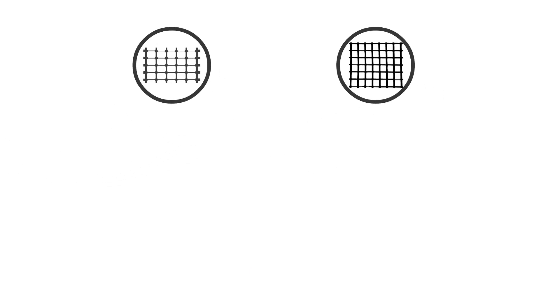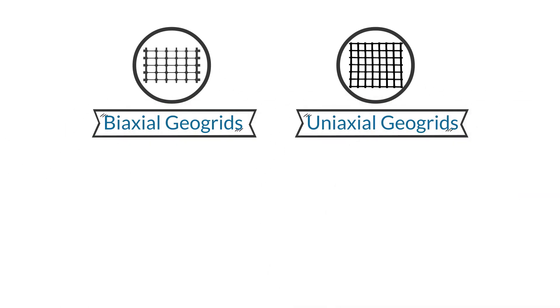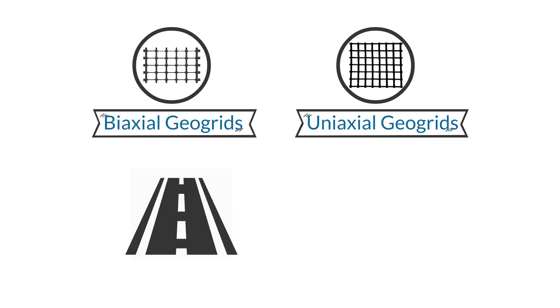There are two main types of geogrid in the market: biaxial geogrids and uniaxial geogrids. Biaxial geogrids contain similar strength in both the machine and cross-machine direction. They are designed to provide support in both directions. They can be knitted or woven, but the majority are extruded.